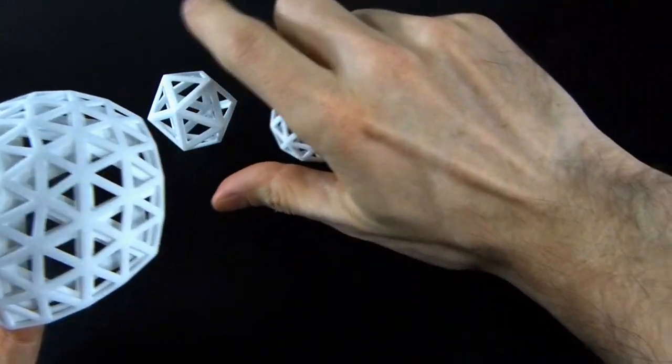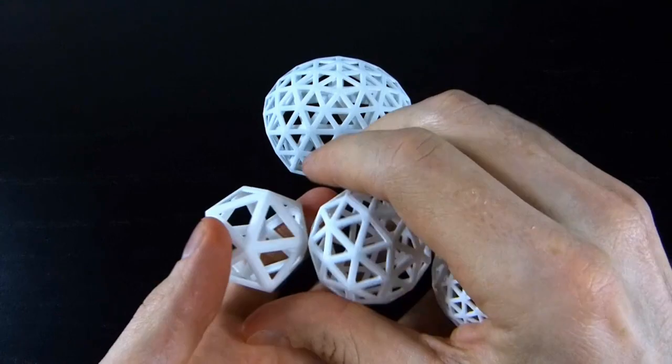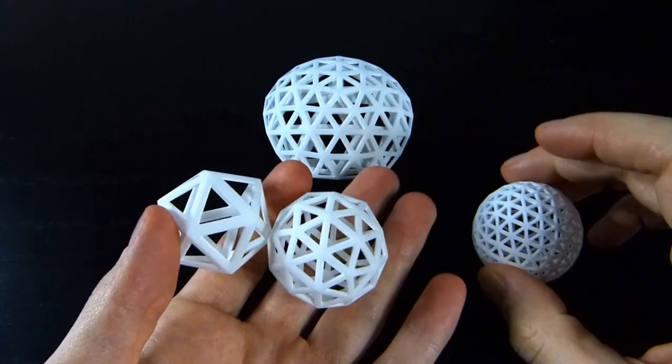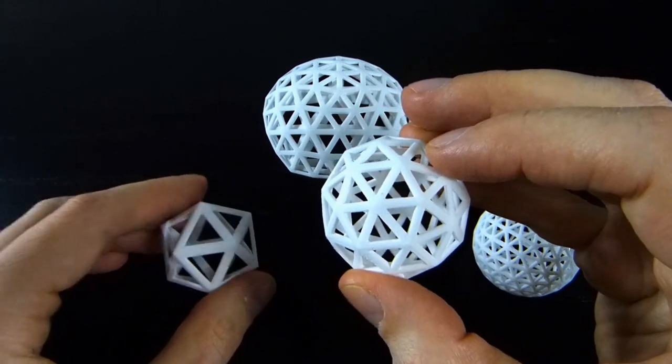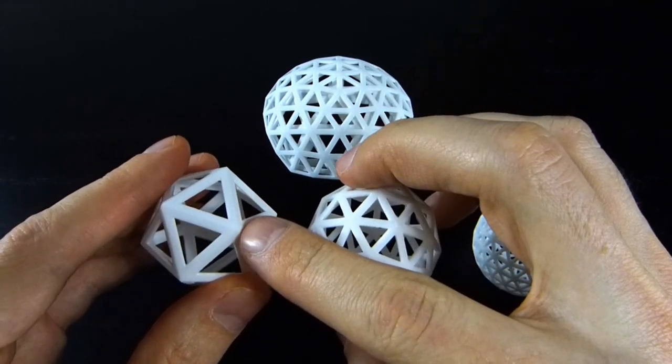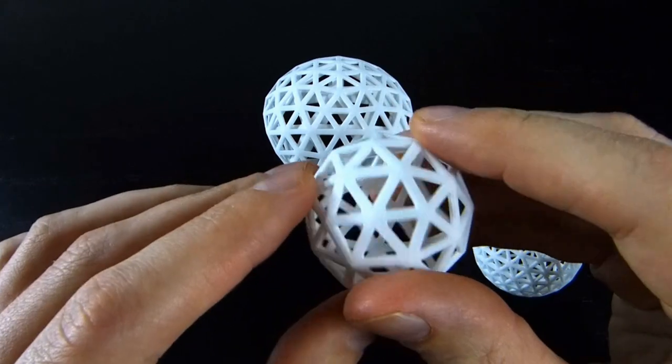It's a little harder to see on the geodesic sphere models, so where are the subdivisions, how is this working? So the trick here is to look for the degree 5 vertices. These degree 5 vertices on the icosahedron, they stay degree 5 when you start subdividing.